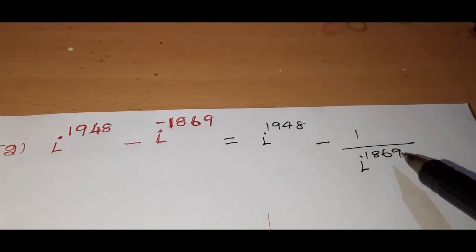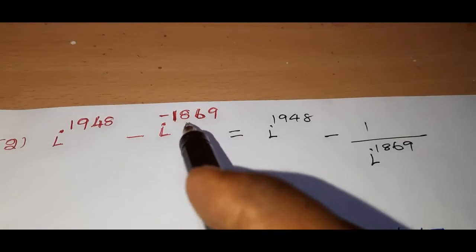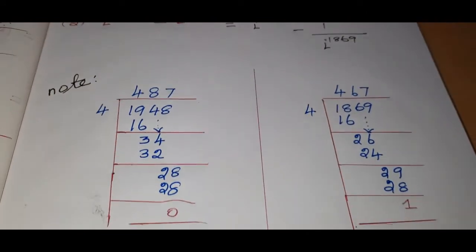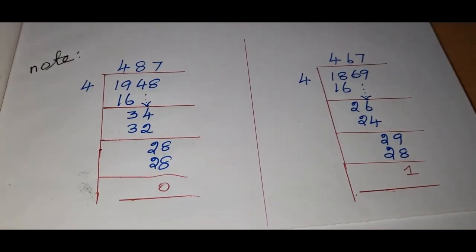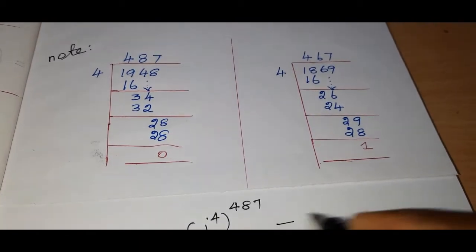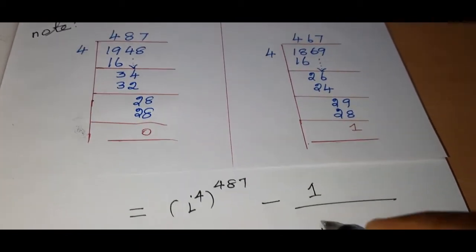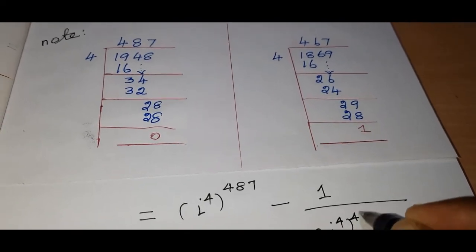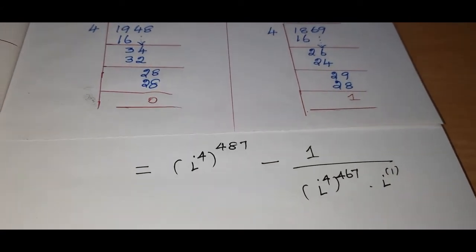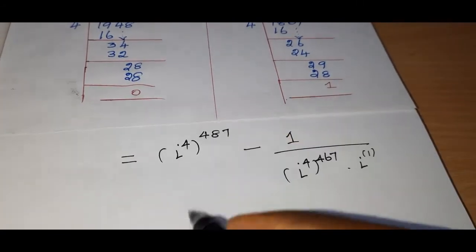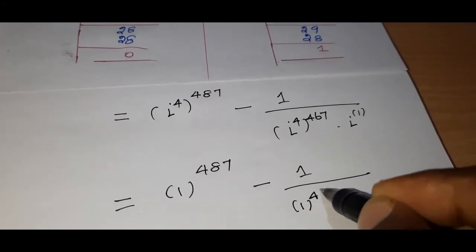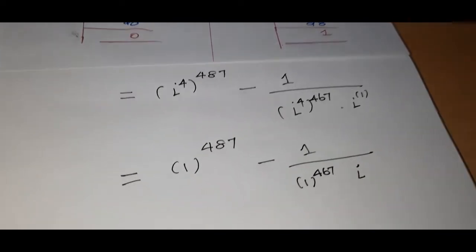The negative power is converted to positive power. For the first number: i power 4 whole power 487. For the second number: i power 4 whole power 467, into i power 1. Since i power 4 equals 1, we get 1 minus 1 by i.